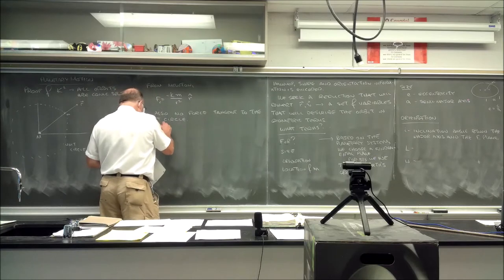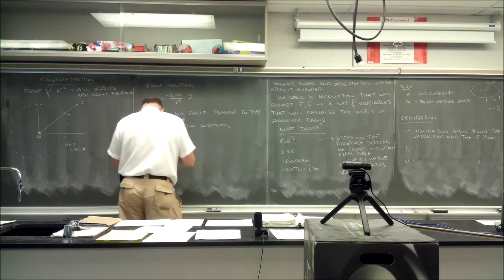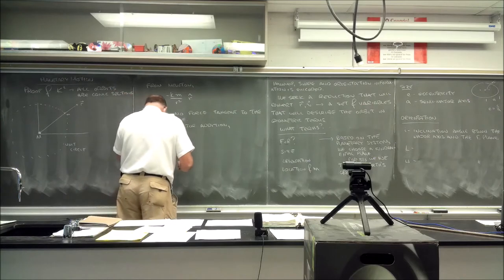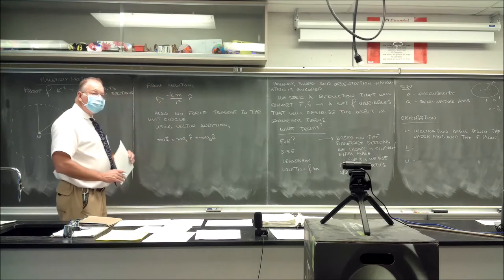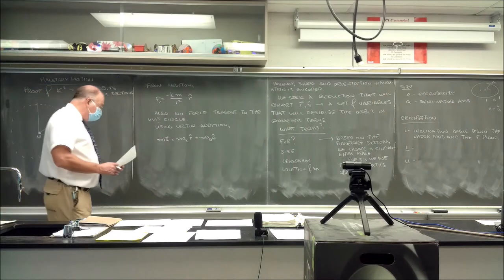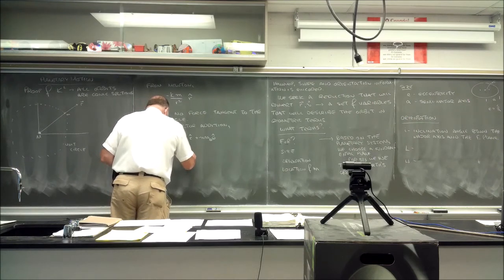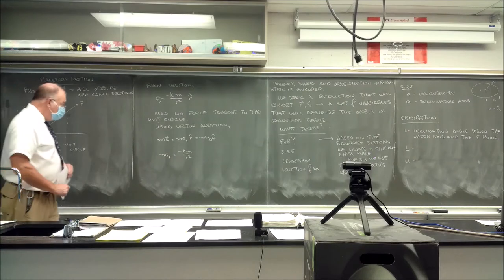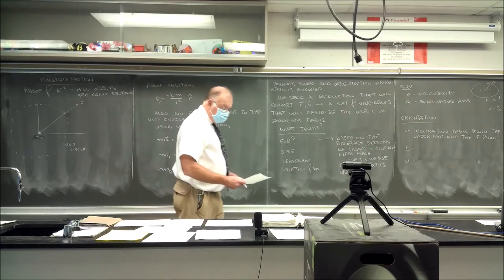Using vector addition, our total force equals m·a_r·r_hat plus m·a_θ·θ_hat. Even though the tangential component is zero, that's still true. We also know m·a_r equals negative k·m over r squared, and m·a_θ equals zero. Those are our initial conditions.